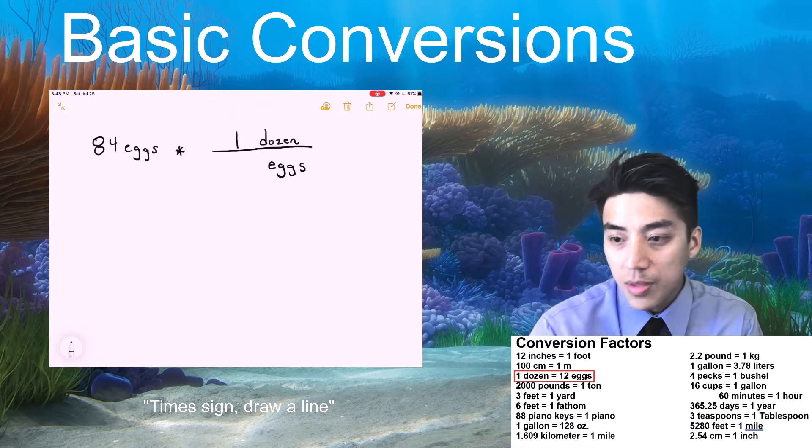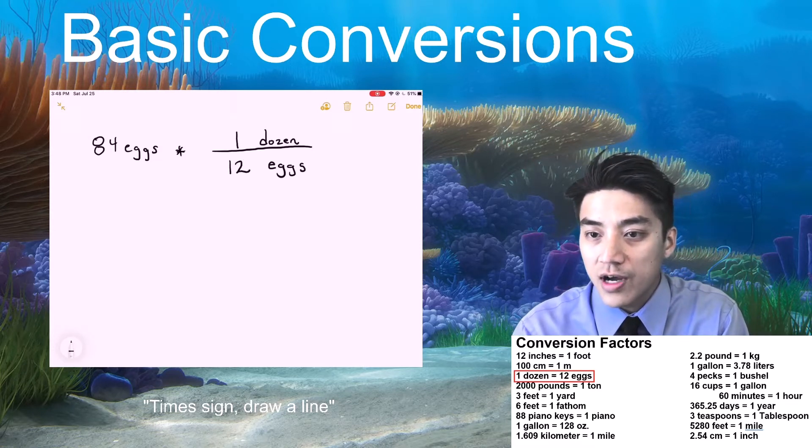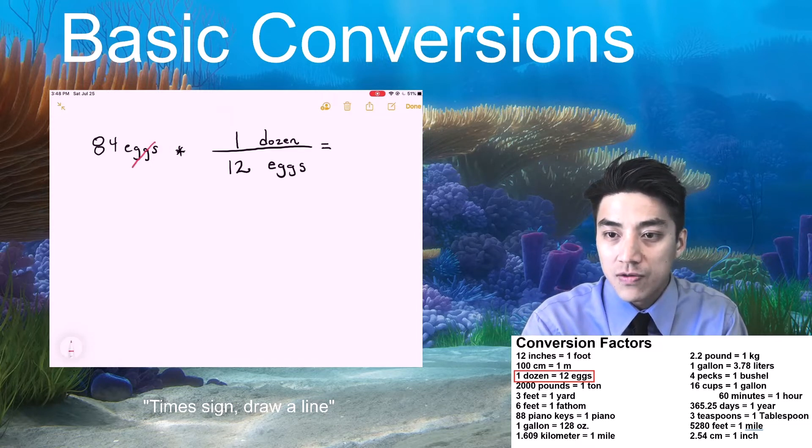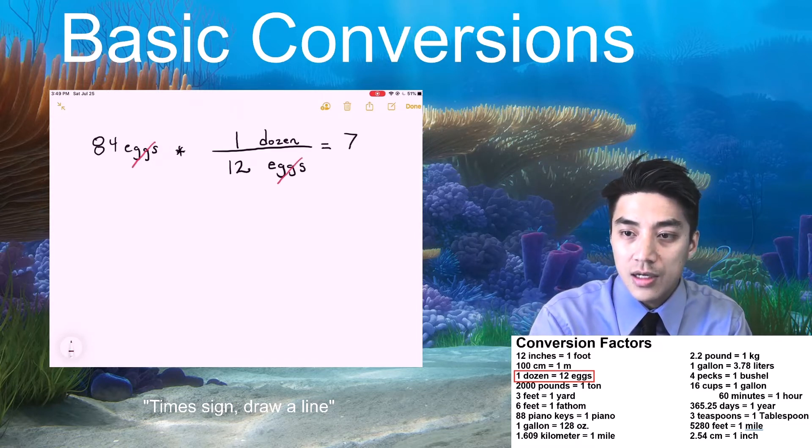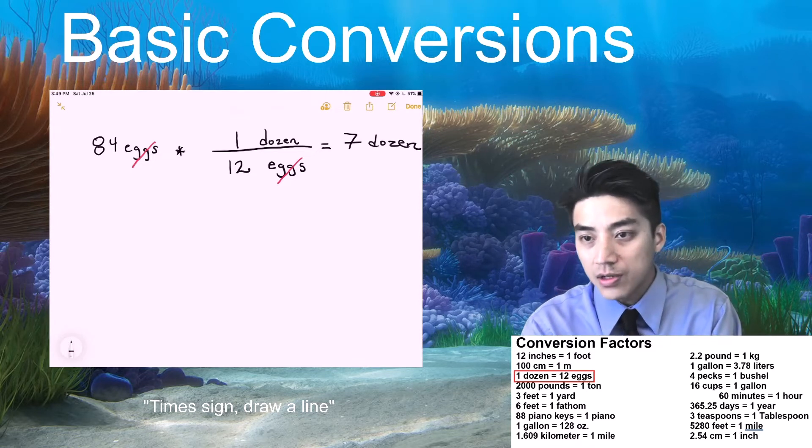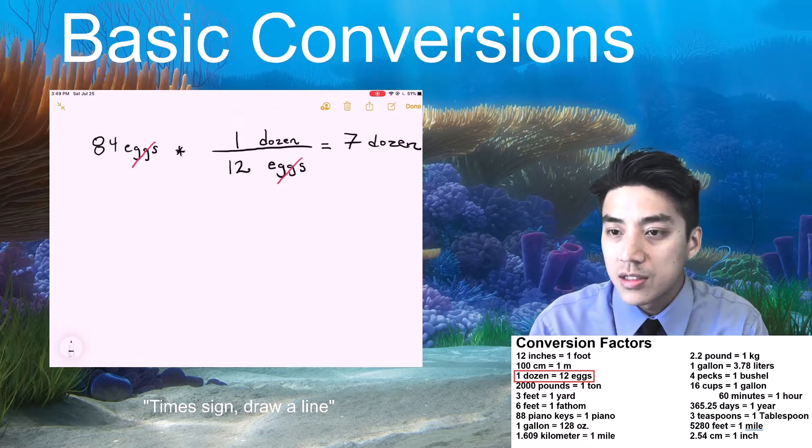And then I look at the bottom of the page, and then it tells me what the conversion factor is. It's 1 to 12. This is a one-step conversion. You can see how eggs would cancel out. So I just go 84 times 1, divide by 12, and then I get 7 dozen as the answer.